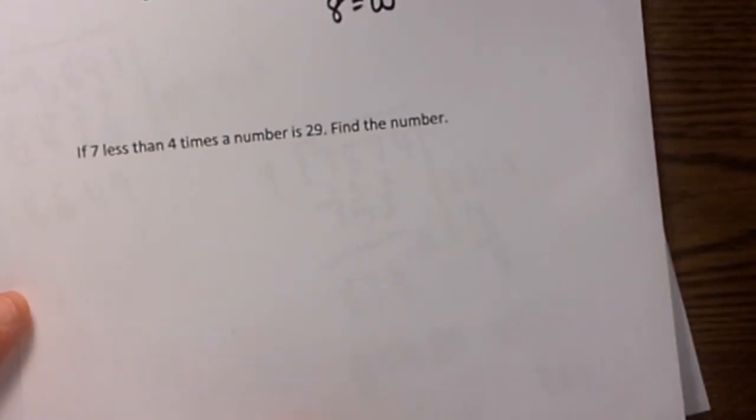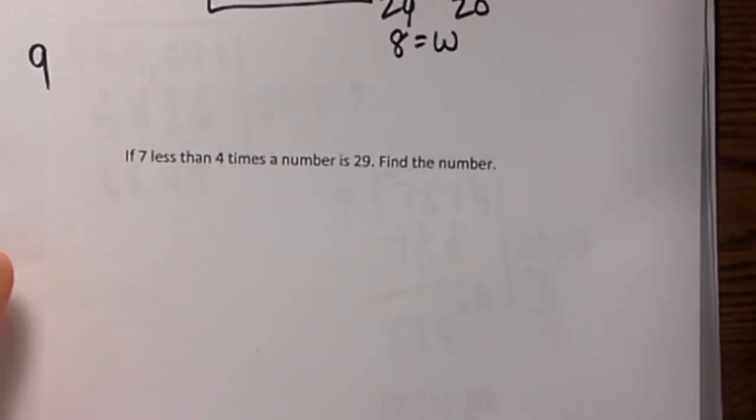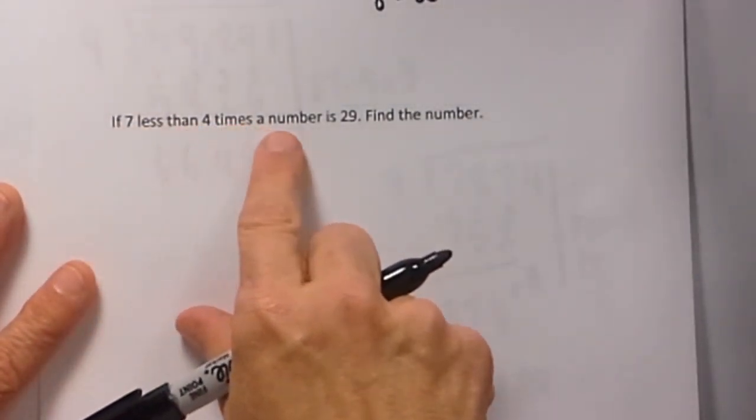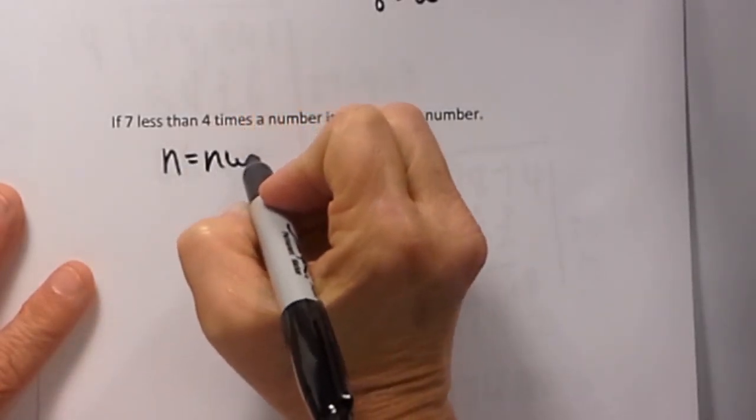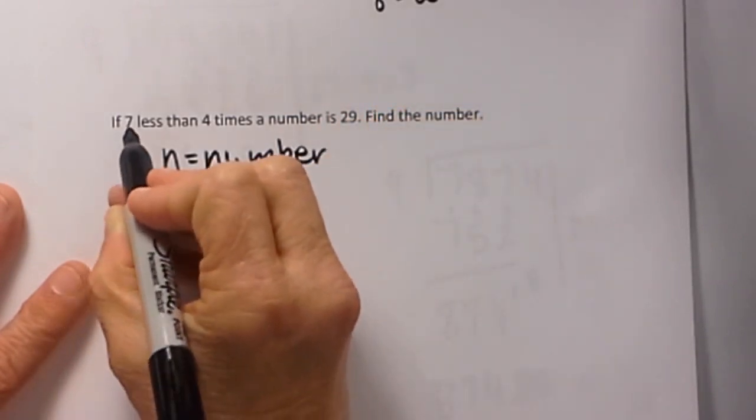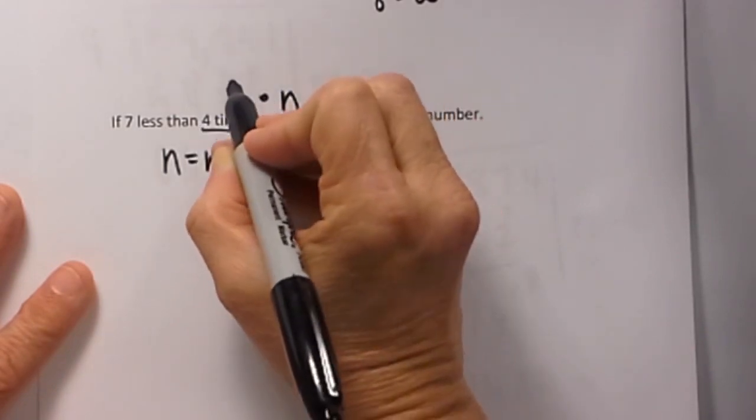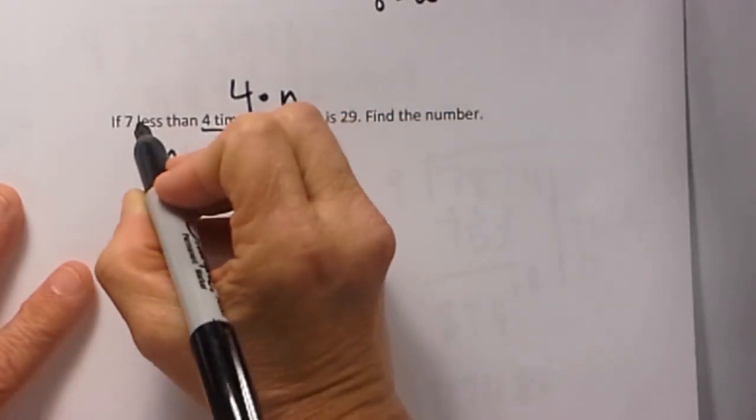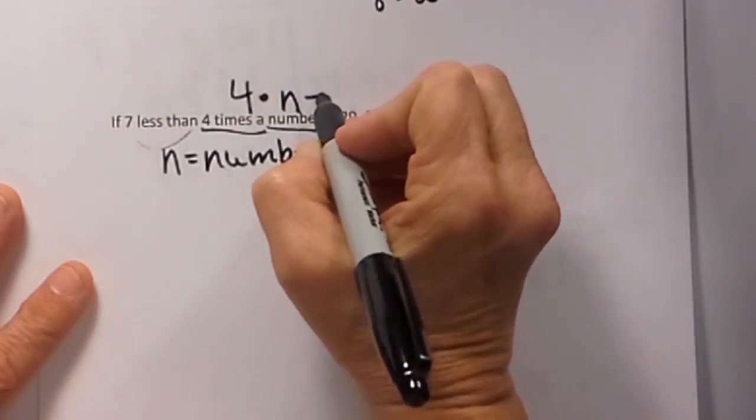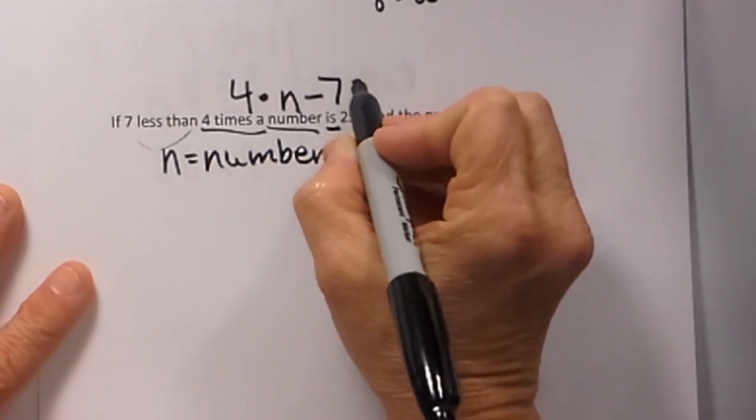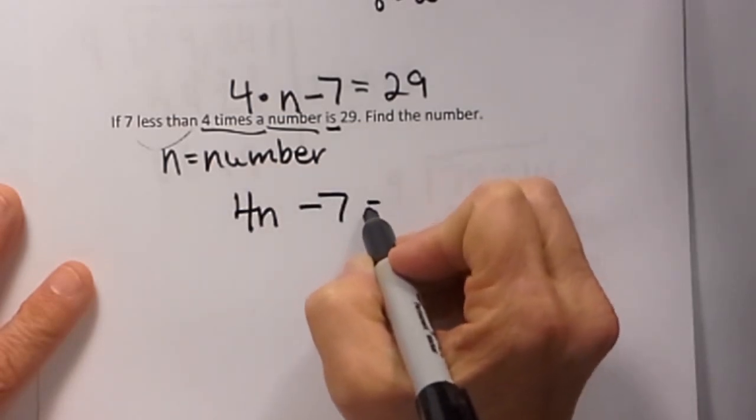Now let's look at a second one. This is just a number problem. If 7 less than 4 times the number is 29, find the number. We don't know the number, so let's say the number is n. So n represents our number. 7 less than a number, so this number is our n value times 4. So 4 times that number is 4n. But we have to take 7 less than that. When we take 7 less that is when we are subtracting 7. So there is our equation: 4n minus 7 equals 29.